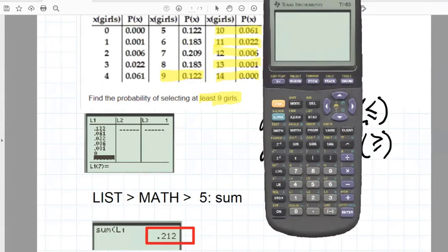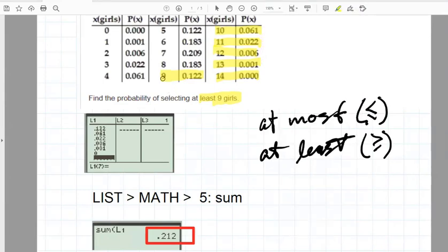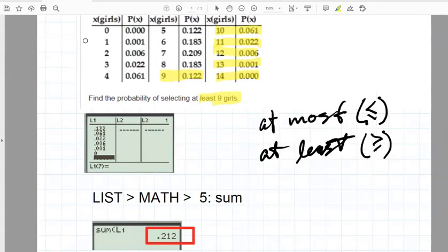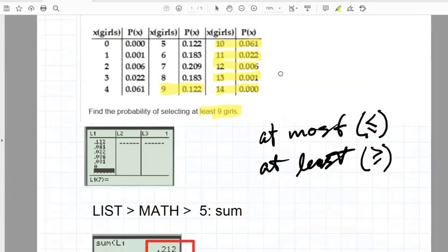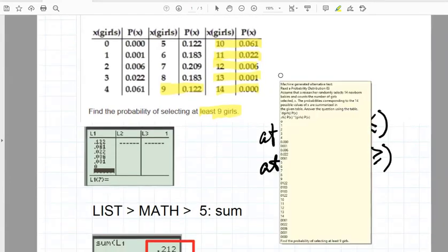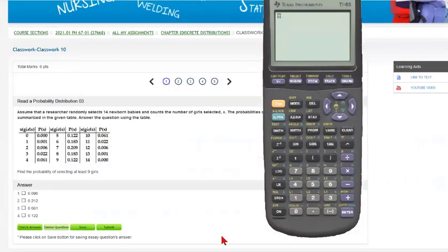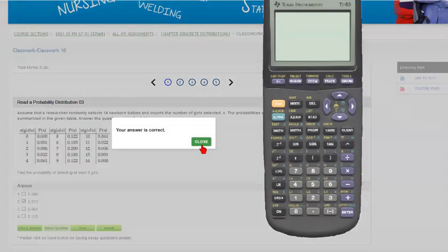which is the probability of having at least nine girls out of 14. So going back to our problem here, the one that is the correct choice is here. And we check that, and that's good.